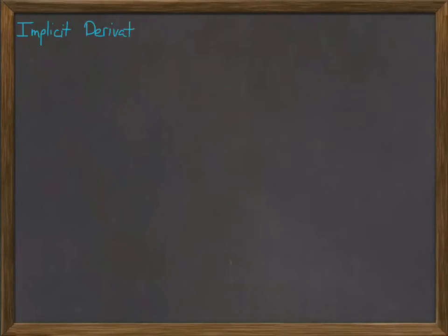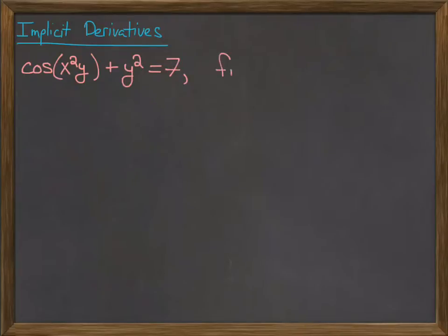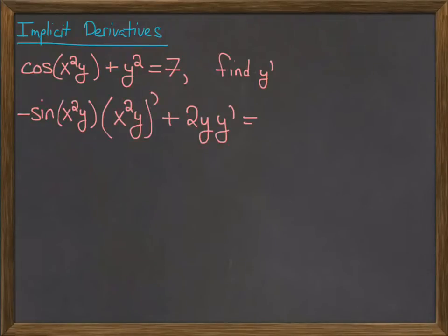Implicit derivatives: these are problems that look like some composite function with x's and y's, cosine of x squared y plus y squared equals 7, find y prime. So what you want to do is take the derivative as normal, but whenever you take a derivative with a y, stick a y prime at the end.